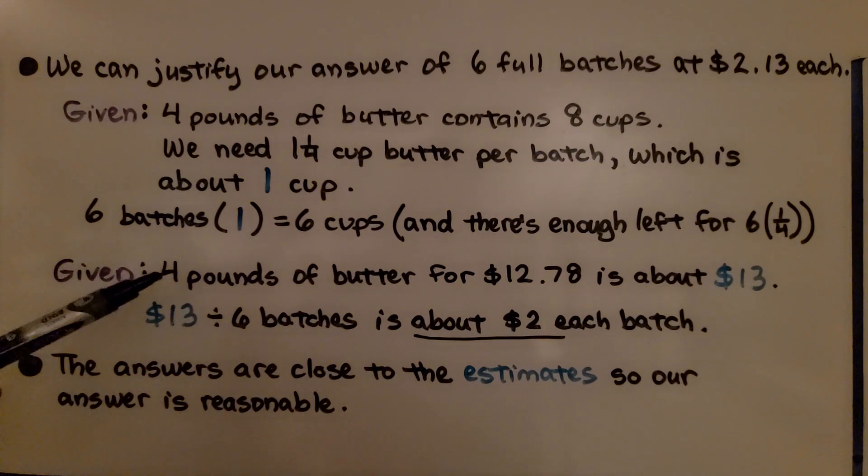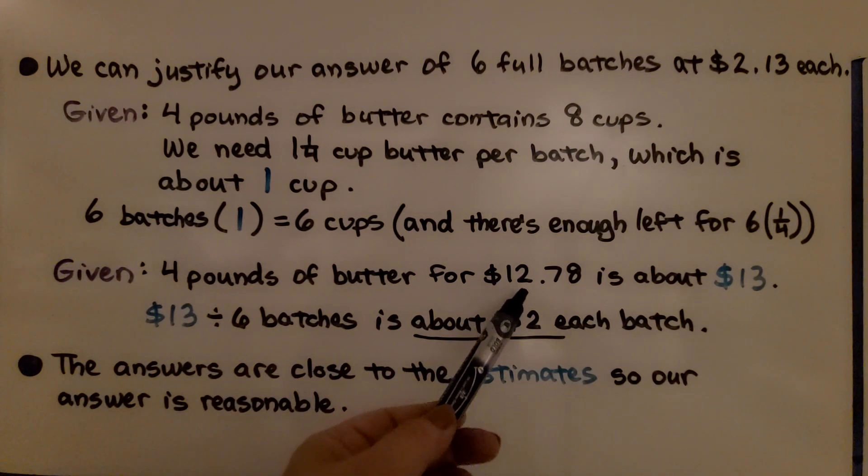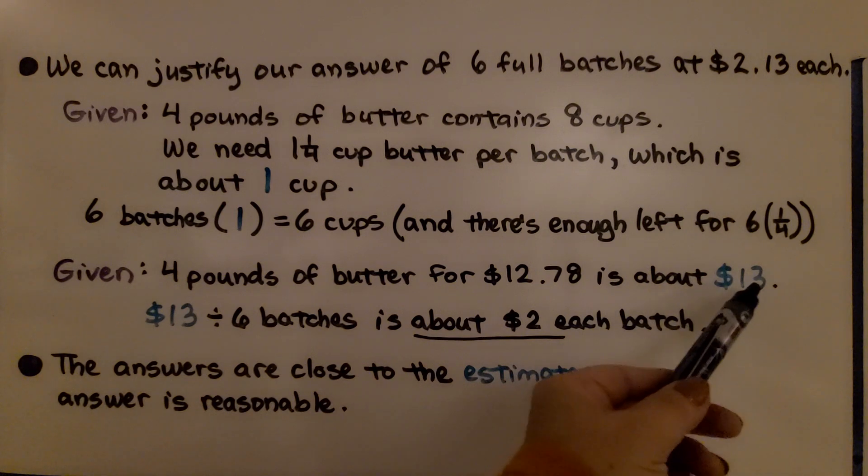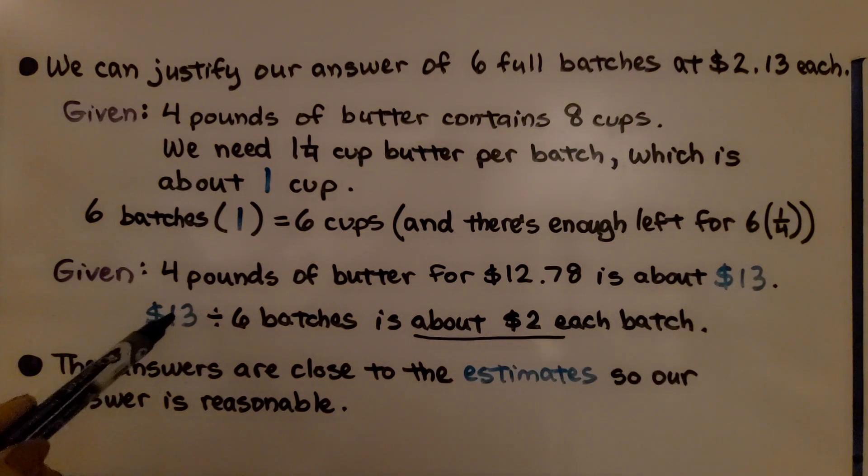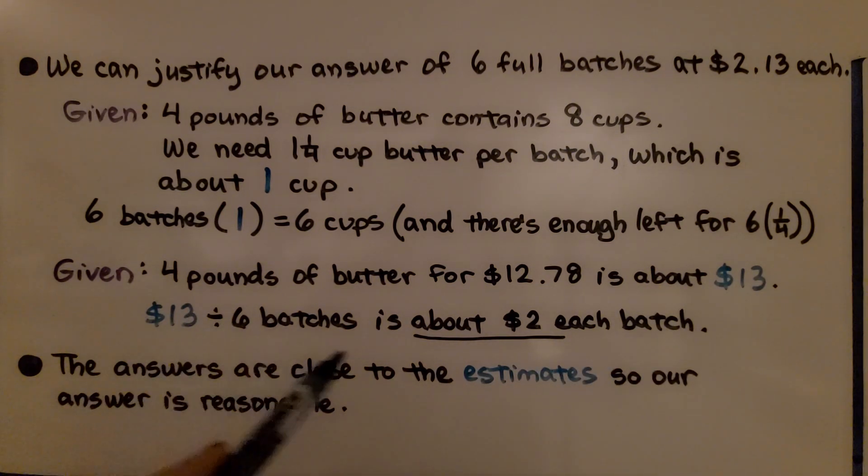It was given that 4 pounds of butter cost $12.78, which is about $13. And $13 divided by 6 batches is about $2 each batch. The answers are close to the estimates, so our answer is reasonable.